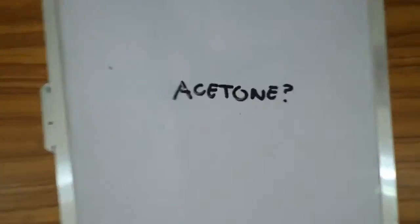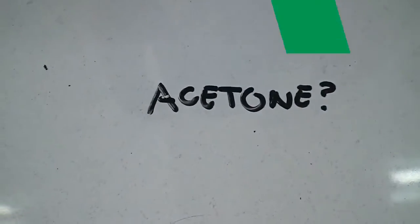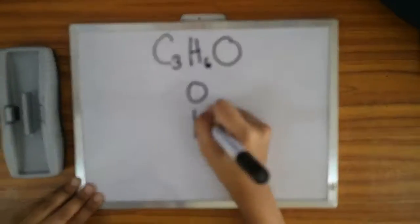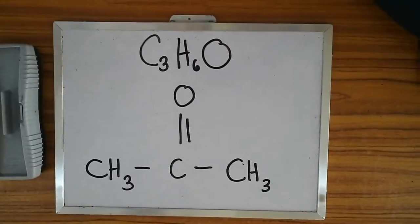But first, we have to know what acetone is. Acetone is composed of 3 carbons, 6 hydrogen, and 1 oxygen atom.